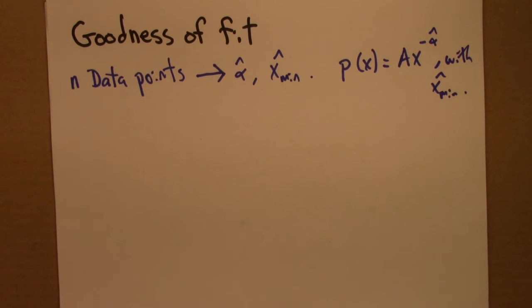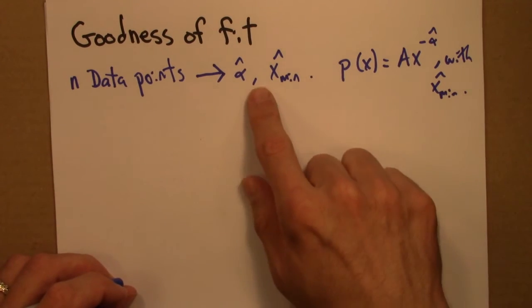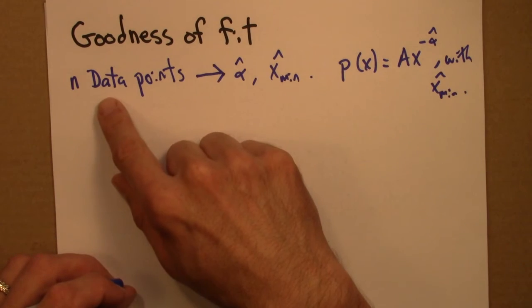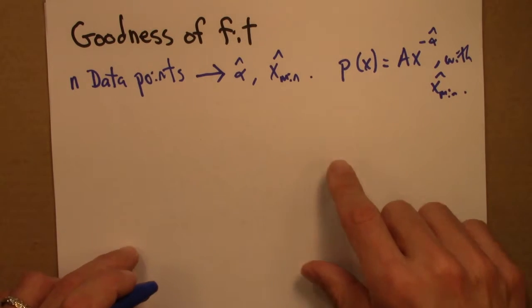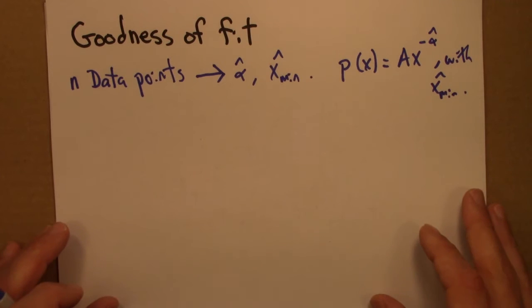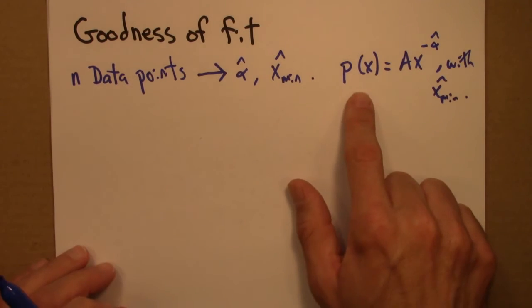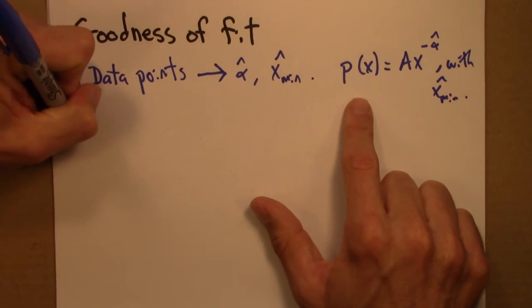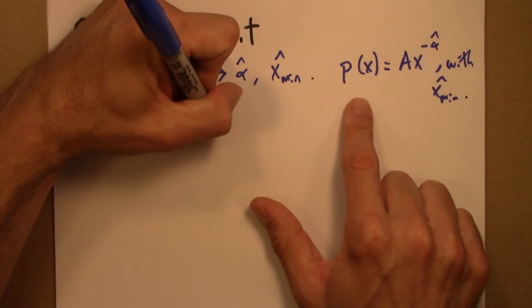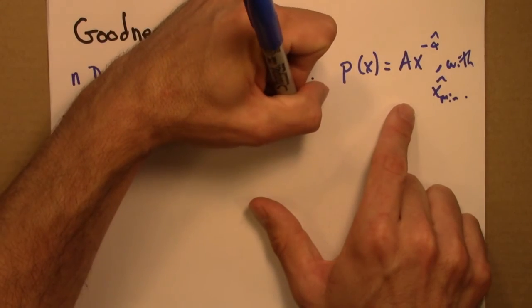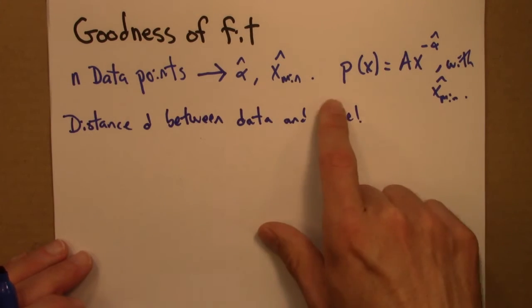So then we want to know how good a fit is it? Well, of course it's not going to be a perfect fit because there's noise in the data and there's also sampling issues as well. We're only sampling n data points so we can't exactly necessarily determine this. So the question then is how good a fit would be reasonable to expect. So here's a way to start approaching this. First we're going to calculate the distance between the data and the model. So this is our model and I'm going to think about the distance d between data and the model.